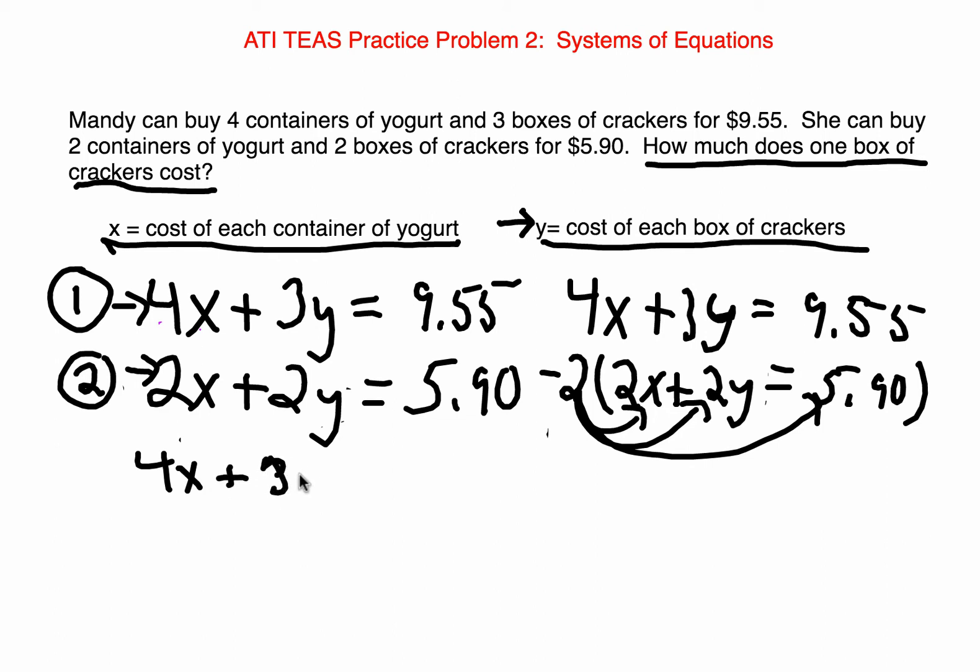I will leave equation 1 alone. Equation 2, because it is multiplied by negative 2, will become negative 4X minus 4Y equals negative $11.80. Make sense. All I do is multiply every term in equation 2 by negative 2.